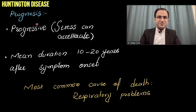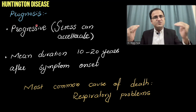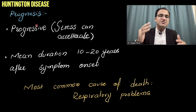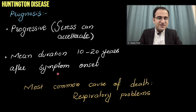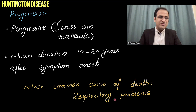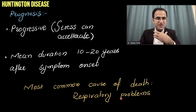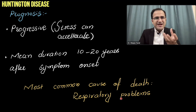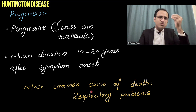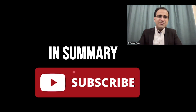The prognosis is progressive deterioration. Stress accelerates disease progression. Mean duration is 10 to 20 years after symptom onset, with life expectancy up to 20 years after diagnosis. The most common cause of death is respiratory problems: abnormal movements affect the throat and respiratory muscles, impairing the gag reflex, increasing aspiration risk.